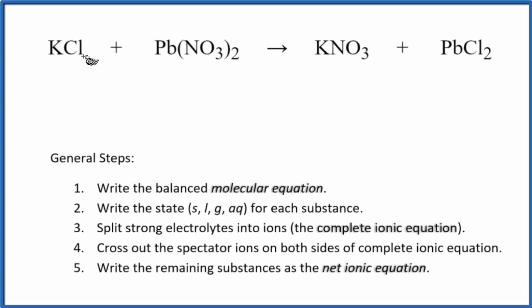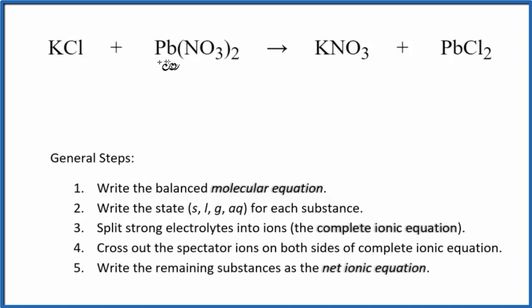In this video, we'll write the balanced net ionic equation for KCl plus Pb(NO₃)₂. This is potassium chloride, and this is lead 2 nitrate.